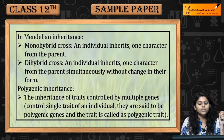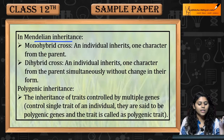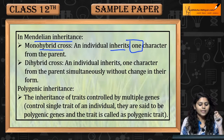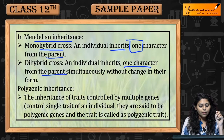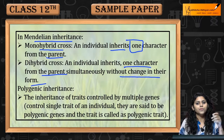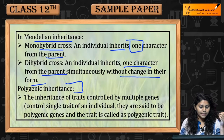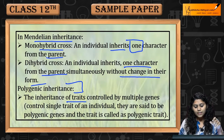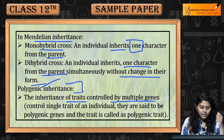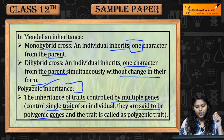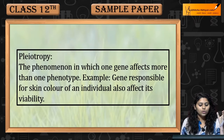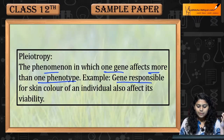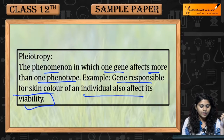Polygenic inheritance is inheritance of traits controlled by multiple genes. Single traits of individuals controlled by multiple genes are called polygenic traits. Pleiotropy is a phenomenon in which one gene affects more than one phenotype. For example, the gene responsible for skin color of an individual also affects its viability.